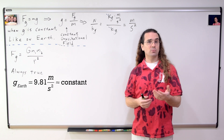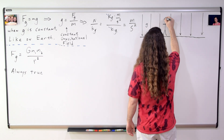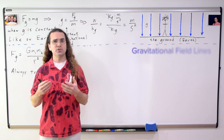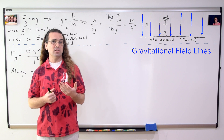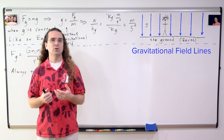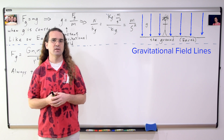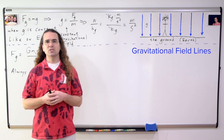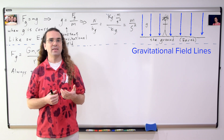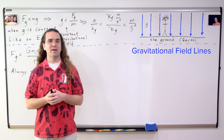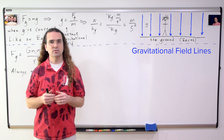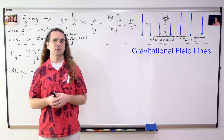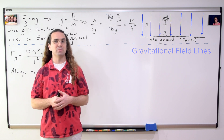We illustrate it this way. These lines here are called field lines, more specifically gravitational field lines. The strength of the field is represented by how close the lines are to one another. Because all these lines are parallel and down, the distance between the lines is constant and they illustrate a constant downward gravitational field. In other words, we live our lives in a constant downward gravitational field which has a magnitude of 9.81 meters per second squared.